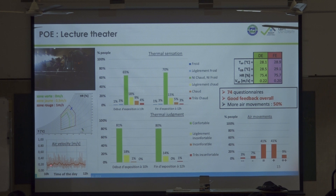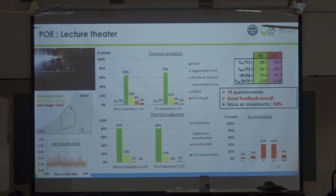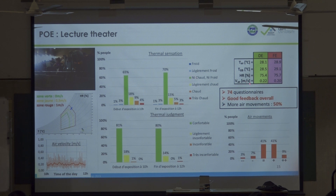We recorded air velocity — the signal is very unsteady but the mean is around 0.2 meters per second — so theoretically users should feel uncomfortable. During this four-hour lecture with 74 people, air temperature was 28 degrees at the beginning and 29 at the end; globe temperature was only 0.4 degrees above, meaning no significant radiant surface. With a velocity of 0.2, normally everyone would say they are very uncomfortable.